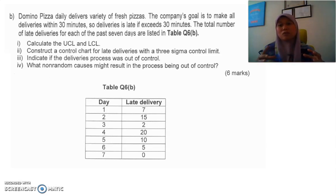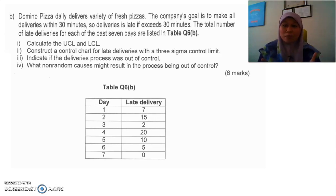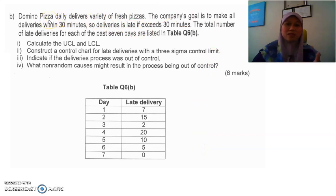In industry, the c-chart is rarely used because industry involves thousands of items. The c-chart is more for small-scale use — for example, to count complaints or calculate defects for a small manufacturer, an SME, or a home-based business. It's very simple. For example, this question is about pizza delivery.